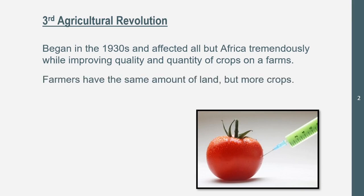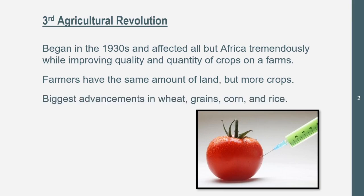During this revolution, farmers had the same amount of land that they did before. However, they were growing more crops, and we'll see a reason for this in just a second. The biggest advancements in crops were wheat, grain, corn, and rice, so you can see how we can improve the quality and quantity of these crops.